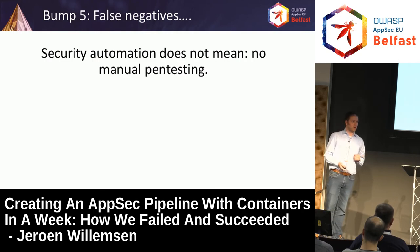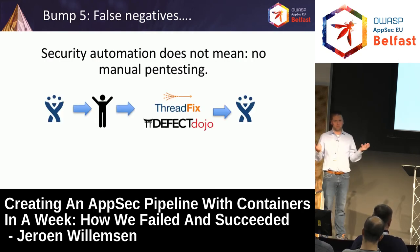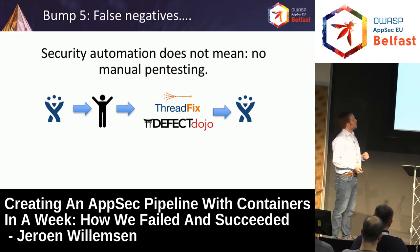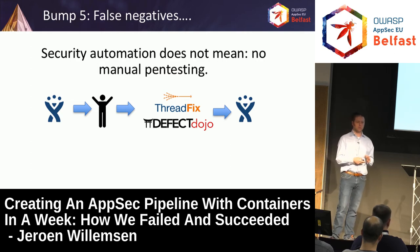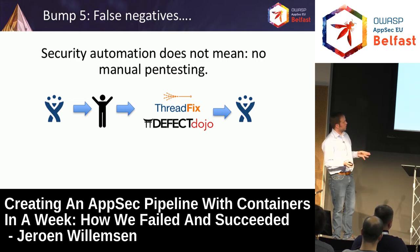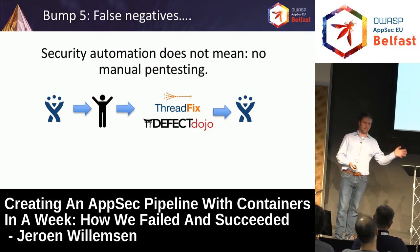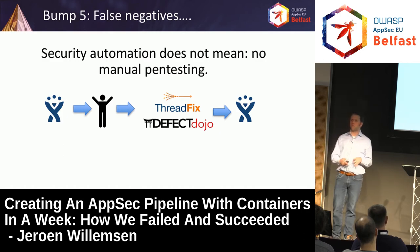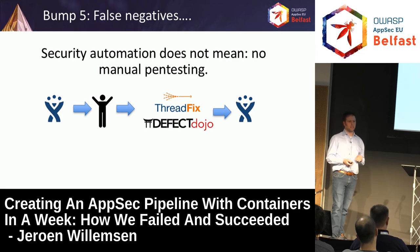Automation doesn't mean no manual pen testing. We created a simple policy: we would have a Jira board from the security team, hire someone to do manual testing, give them a bunch of annotated tasks, and when they submitted to ThreadFix or DefectDojo, new issues would be created in Jira. At least you have the same flow — everything gets centralized in your vulnerability manager, because traceability is key.